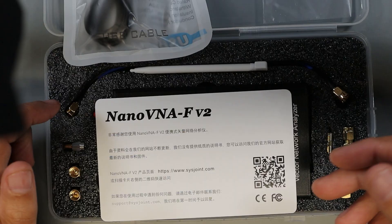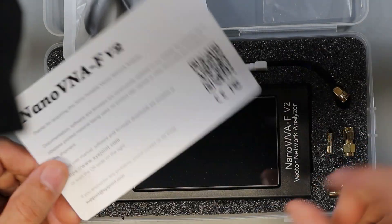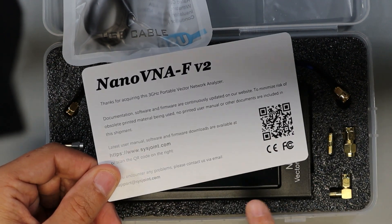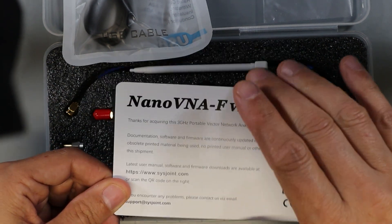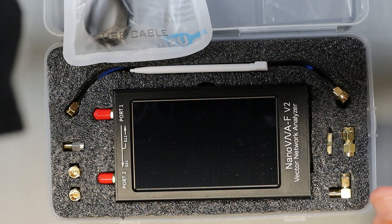Here's a quick look at everything that comes with your NanoVNA. First is an information card, English is on the back. There's a QR code here that'll take you to the Sysjoint website so you can download the full manual and any firmware updates for this.